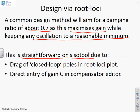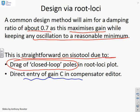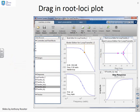We want to show that this is straightforward in CISOTOOL. We're going to show how you can drag the closed-loop poles to the position you want, dragging them to where they have the damping ratio that you want. After that, you can fine-tune by direct entry of the gain C in the compensator editor.